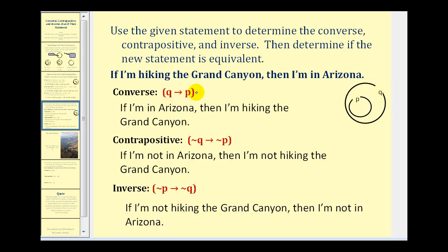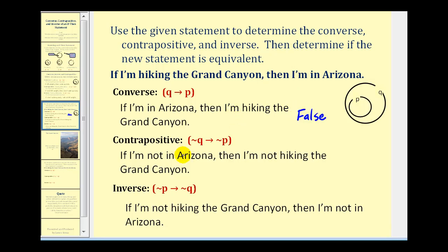So the converse, if-Q-then-P, would be: if I'm in Arizona, then I'm hiking the Grand Canyon. So if I'm inside set Q, I'm not guaranteed to be inside P, and therefore the converse is not equivalent to if-P-then-Q. In this specific case, just because I'm in Arizona does not mean that I'm hiking the Grand Canyon, therefore this would be false.